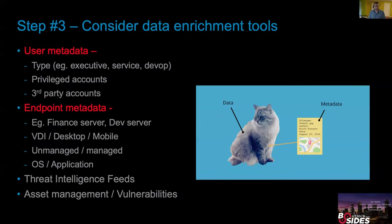The last thing to consider is data enrichment. When looking at identities like users, Active Directory can help by adding metadata such as department, specific role, and user privileges. For assets like servers or hosts, it's great to add context about which department the asset belongs to, how critical it is, which are your crown jewels, and which is just a QA server with no internet access.